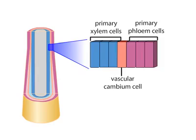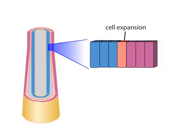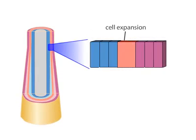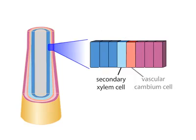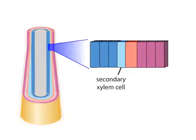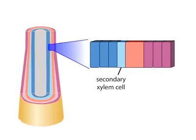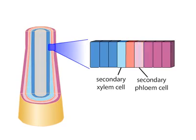After a cell in the vascular cambium expands, it divides and produces two new cells. One of these cells differentiates into a new xylem or phloem cell, and the other remains undifferentiated as part of the vascular cambium. This undifferentiated cell can then continue to divide to produce additional cells of secondary xylem or phloem.